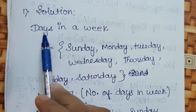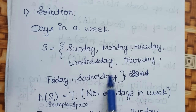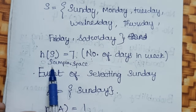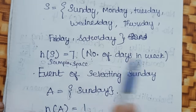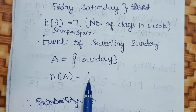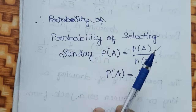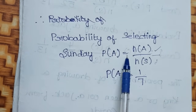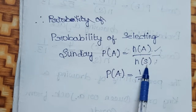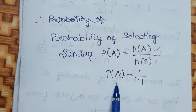Solution: how many days are in a week? Sunday, Monday, Tuesday, Wednesday, Thursday, Friday, and Saturday. So our sample space n of S is 7. The event A is selecting Sunday, so n of A is 1. The probability of A equals n of A by n of S, which is 1 by 7.